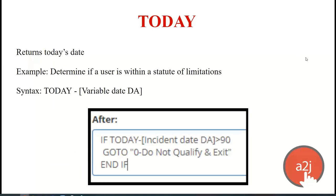The today function returns today's date. You never know what day your end user will run the interview, and you don't want to manually edit calculations when the year rolls over. Just use today — A to J knows the current date programmatically and you can use the today function for calculations. You can also use it as minimum or maximum delimiters on a calendar field. If you don't want to show days in the past, use today as the minimum. If you don't want to show days in the future, use today as the maximum. Today is very useful in both logic and in fields.